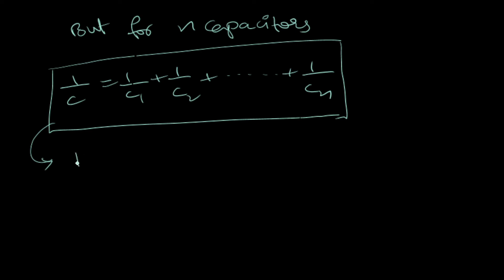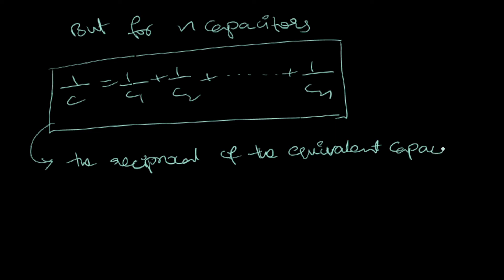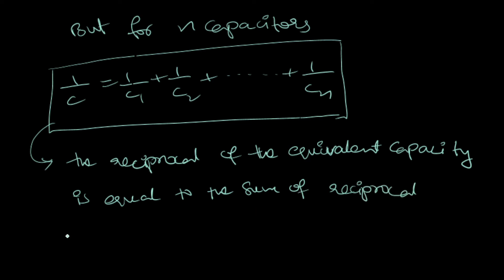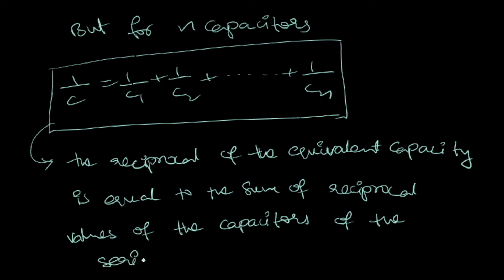From this equation you can say that the reciprocal of the equivalent capacitance is equal to the sum of the reciprocal values of the capacitances of each capacitor in the series combination — that is, 1 by C equals the sum of the reciprocals of capacitance of each capacitor connected in series.